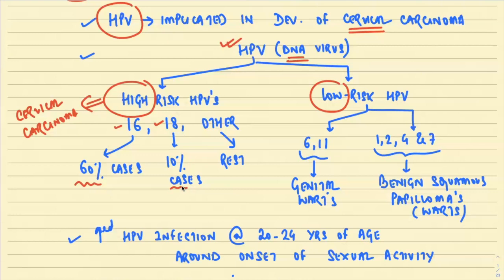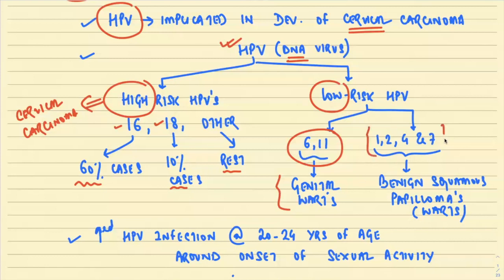On the other hand, low-risk HPVs do not cause carcinoma but cause certain benign lesions. Low-risk HPV 6 and 11 are responsible for anogenital warts, whereas low-risk HPVs 1, 2, 4, and 7 are responsible for warts in other areas of the body, leading to benign squamous papilloma.